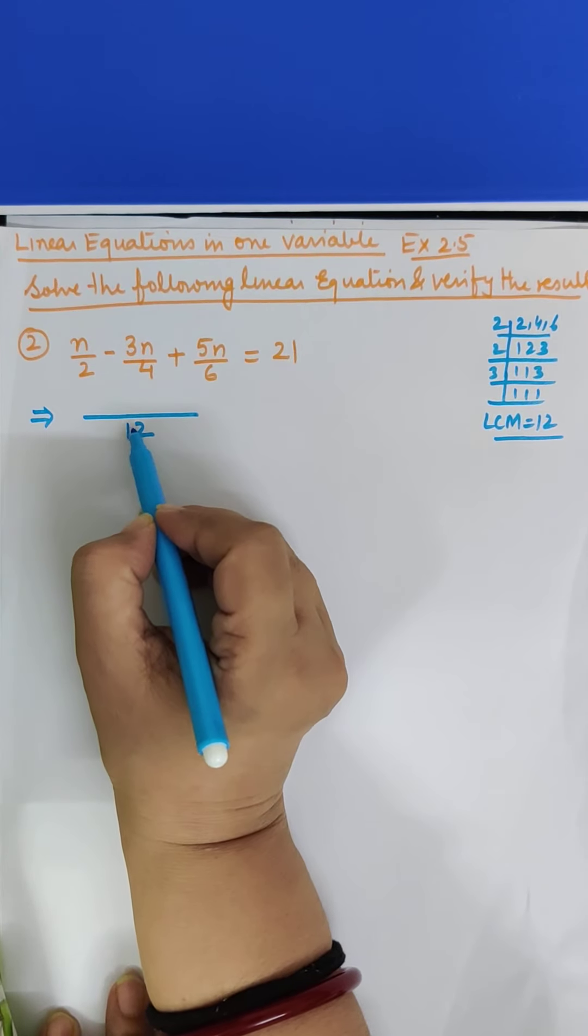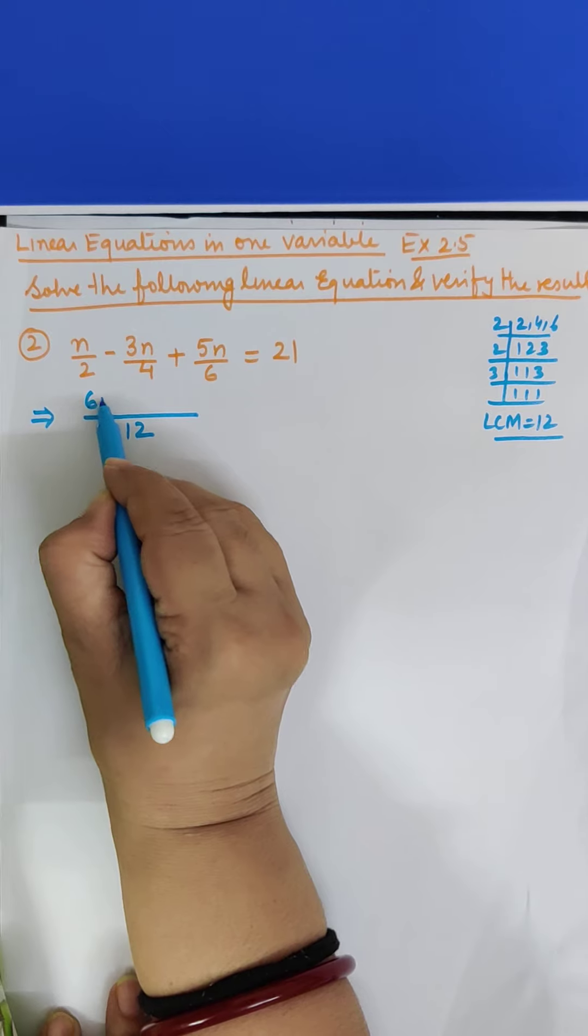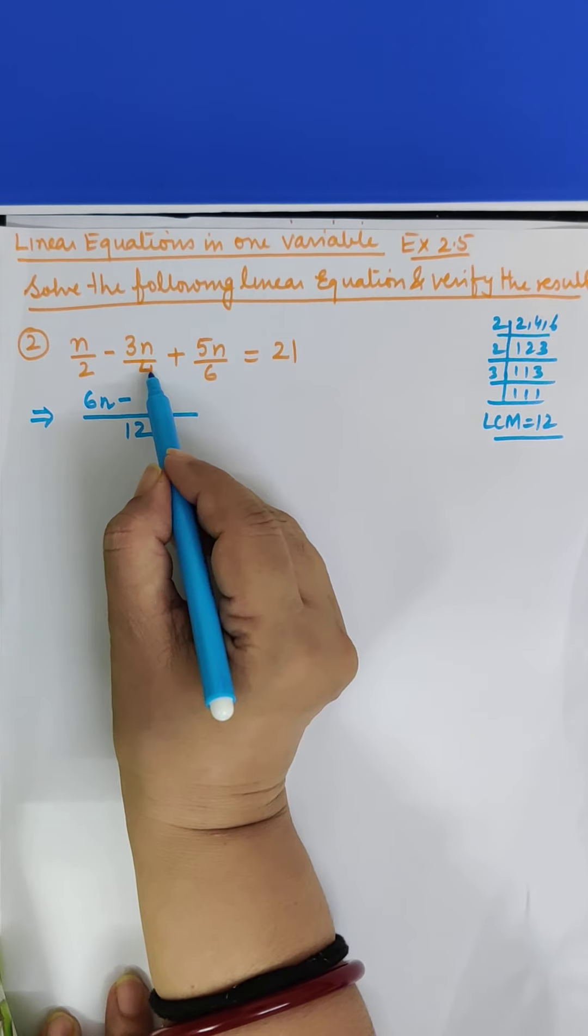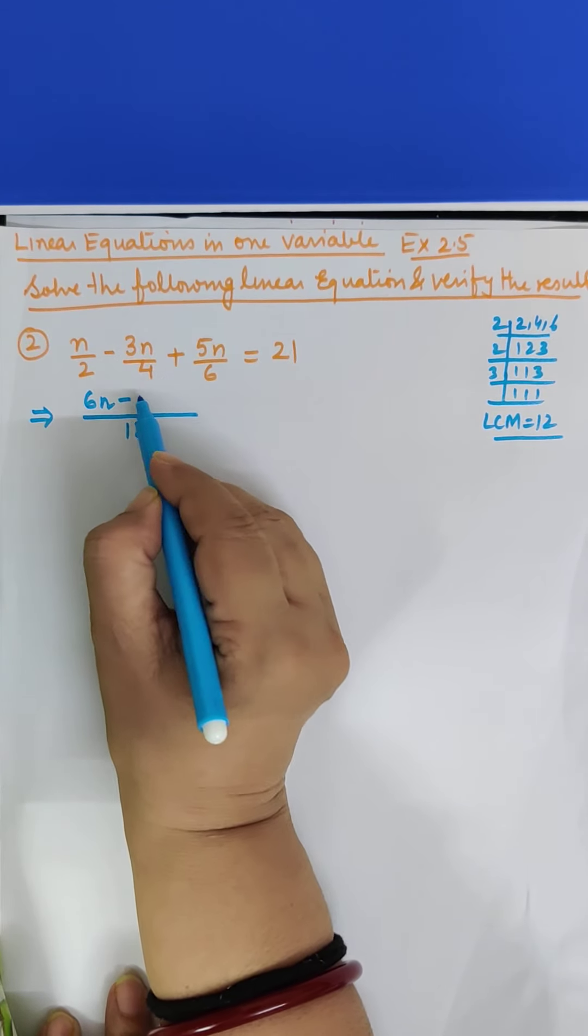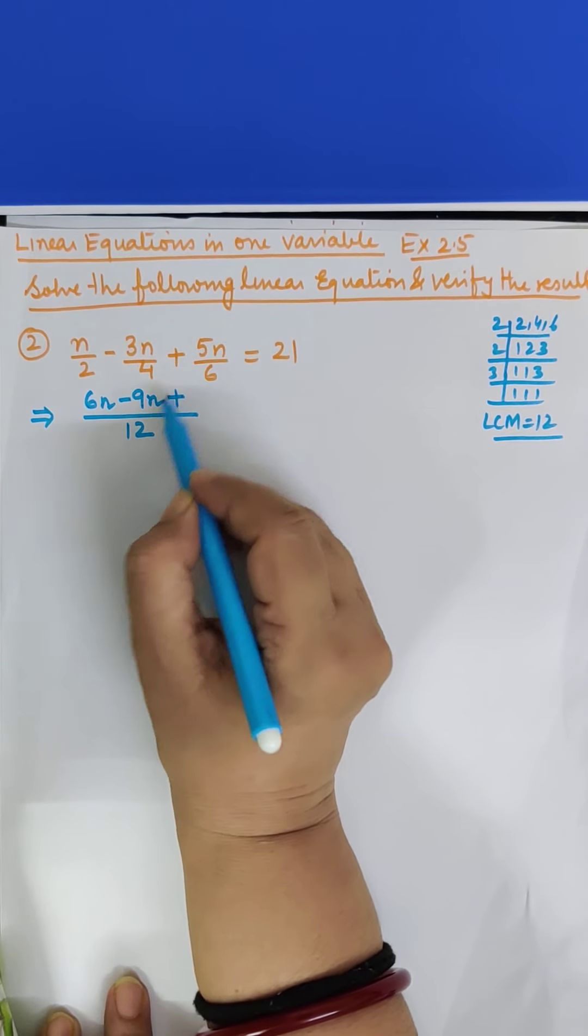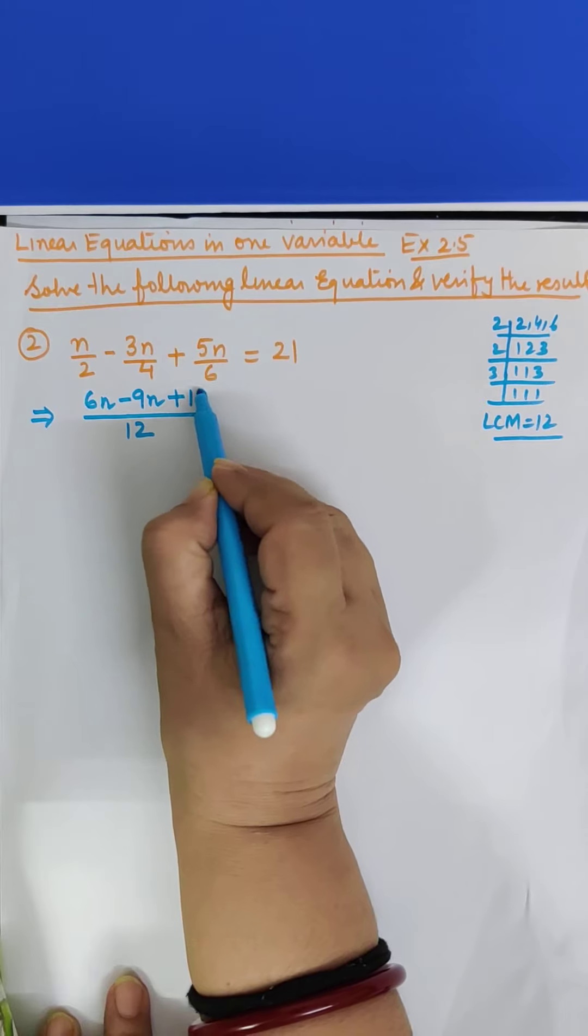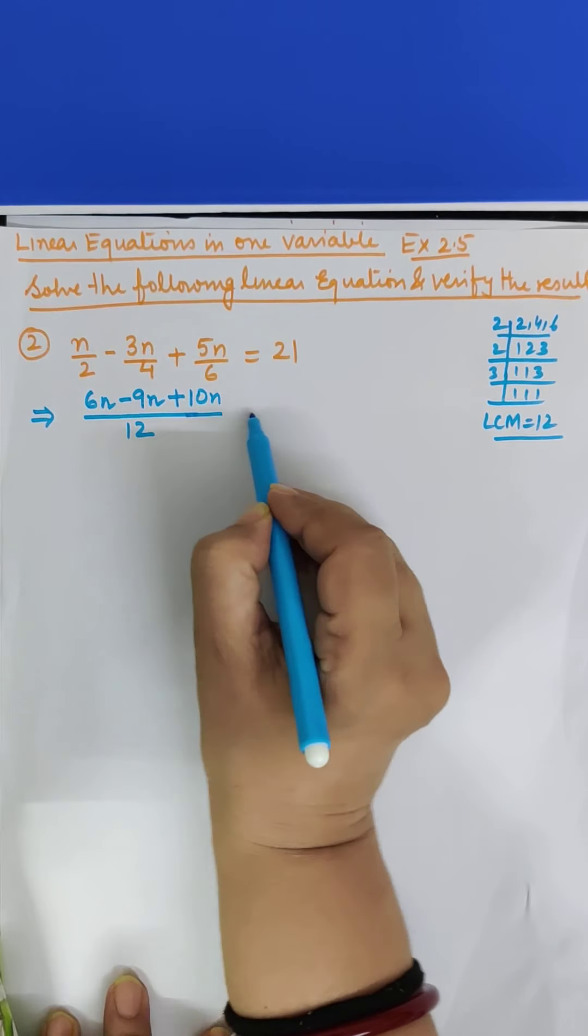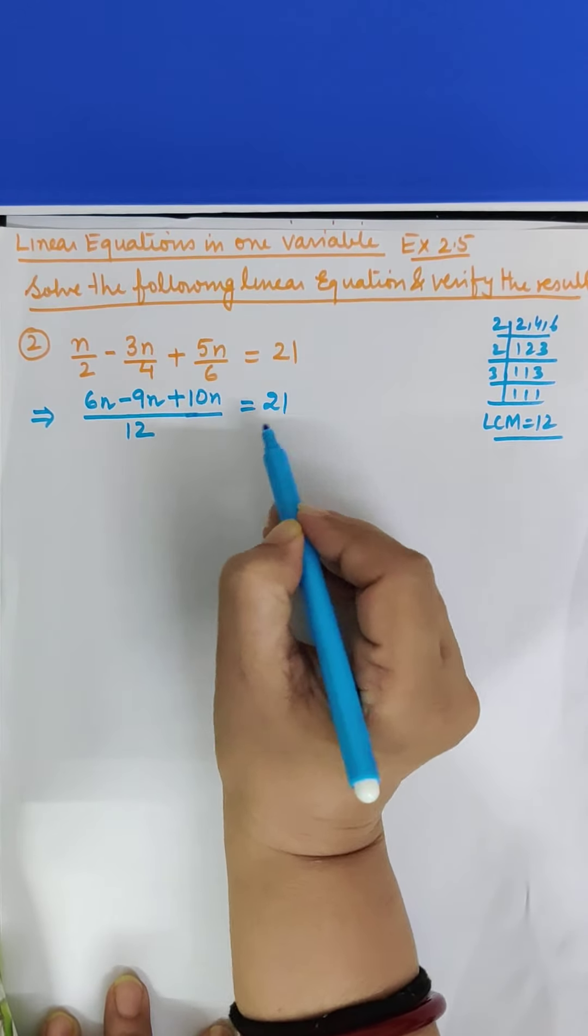So 2, 6 is 12, 6 into N is 6N. Minus 4, 3 is 12, 3, 3 is 9, 9N. Plus 6, 2 is 12, 2, 5 is 10, you will get 10N. This is equal to 21.